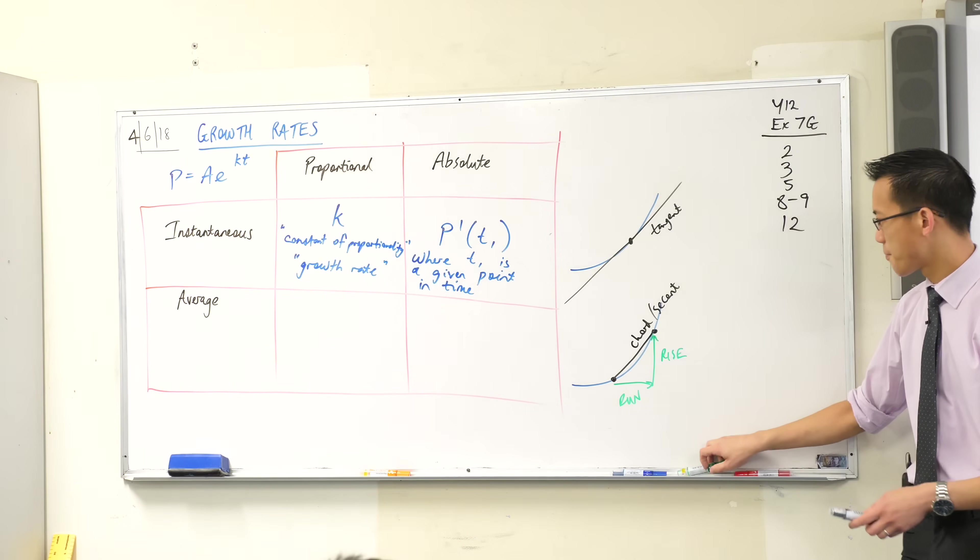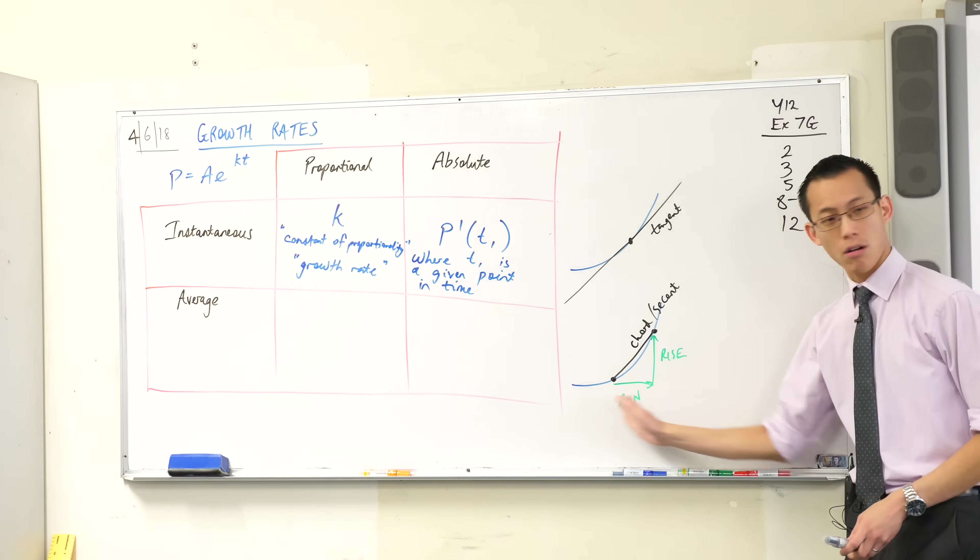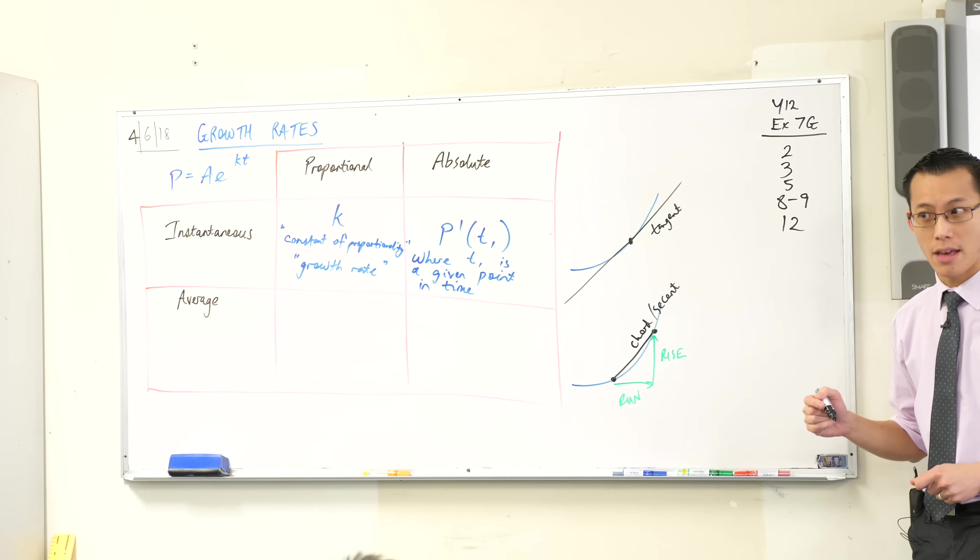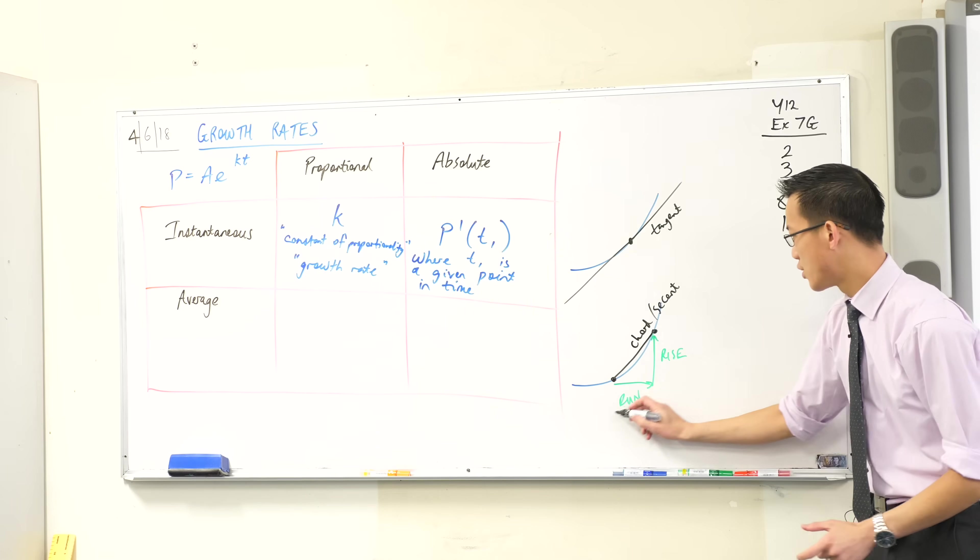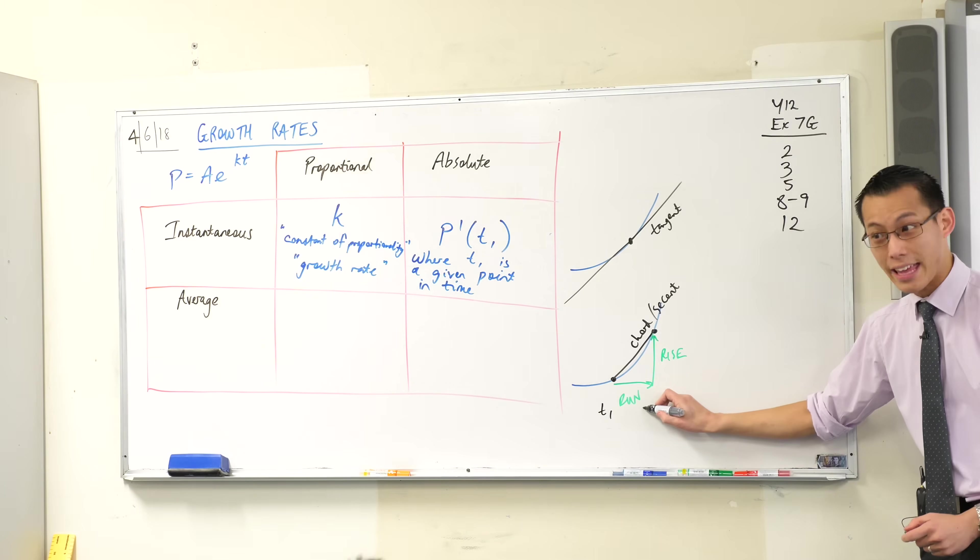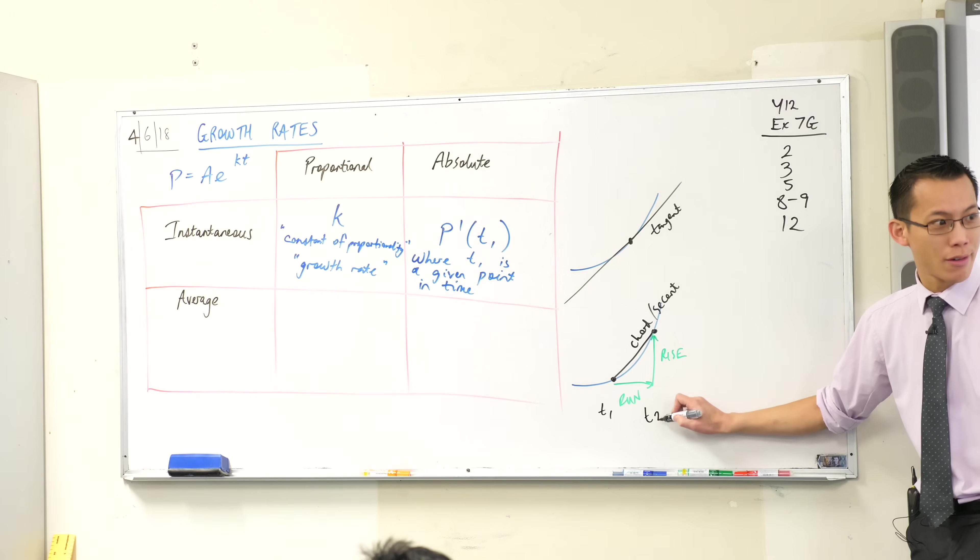But think, think, think. On an exponential growth situation, what is the horizontal axis? What is that axis usually? That's usually the time axis. So you've got a time that you start, time one, and you've got a time that you end, time two.